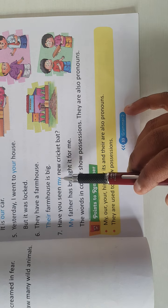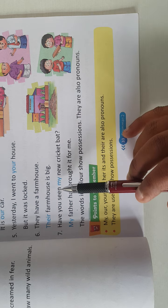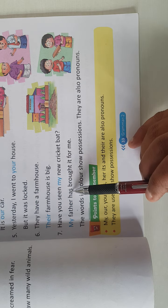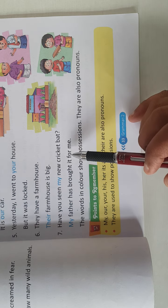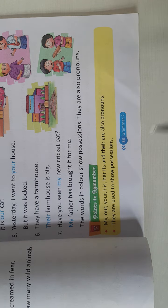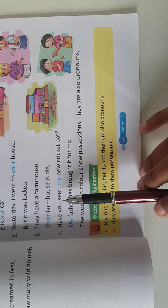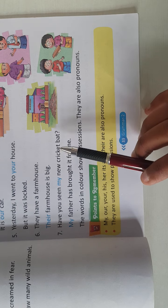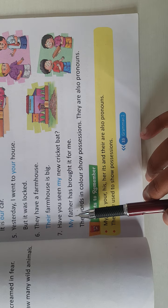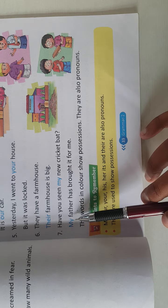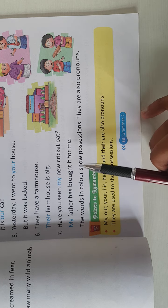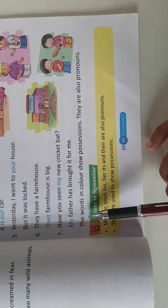Next: Have you seen my new cricket bat? क्या तुमने मेरा नया cricket bat देखा है? My father has bought it for me. मेरे पिताजी मेरे लिए खरीद कर लाए हैं। इस line में bat का बच्चे से क्या संबंध है — कि यह उसका है। And in the next line, father का बच्चे से क्या relation है — जो father है, वो उस बच्चे के हैं।